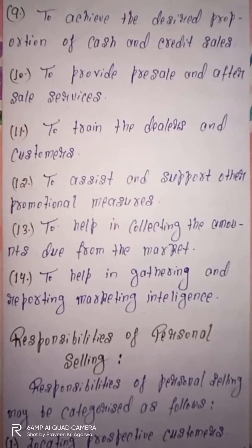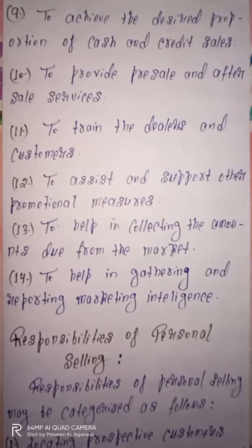Next one is to train the dealers and customers. Customers aur dealers dono ko hi company ke product ke regarding training provide karna hai, uske use ke regarding aur uske different functions ke regarding. Toh ye particular objective hai, ye personal selling ke basis par achieve kiya ja sakta hai.